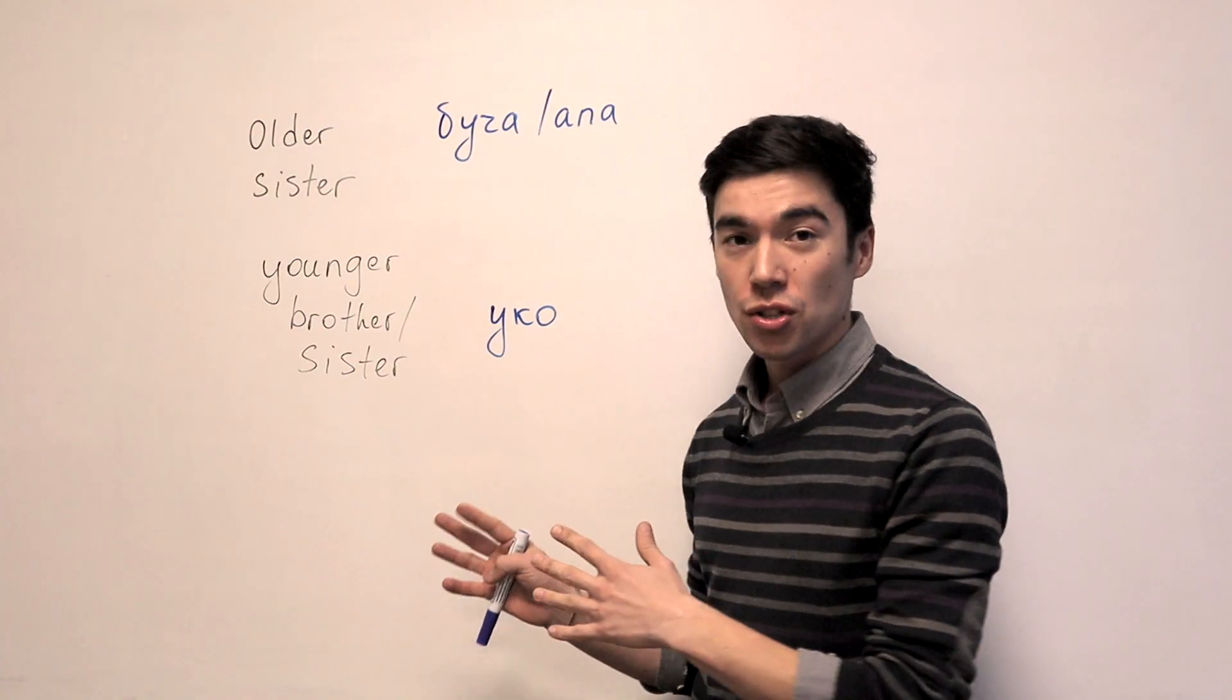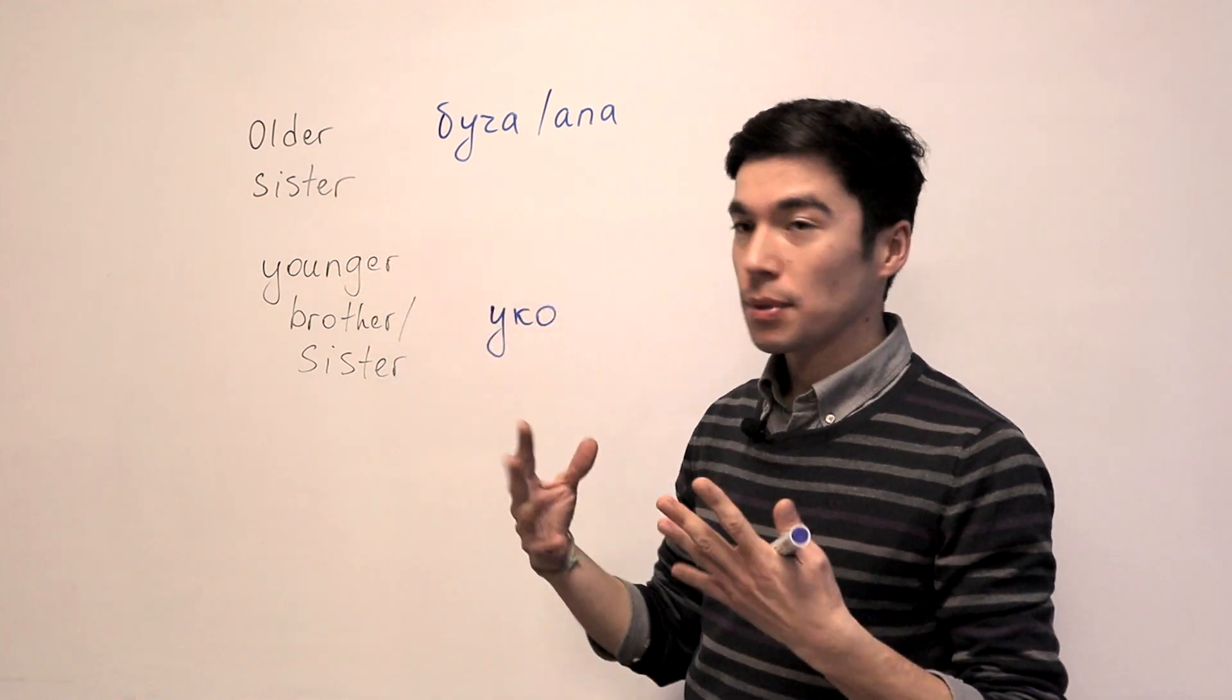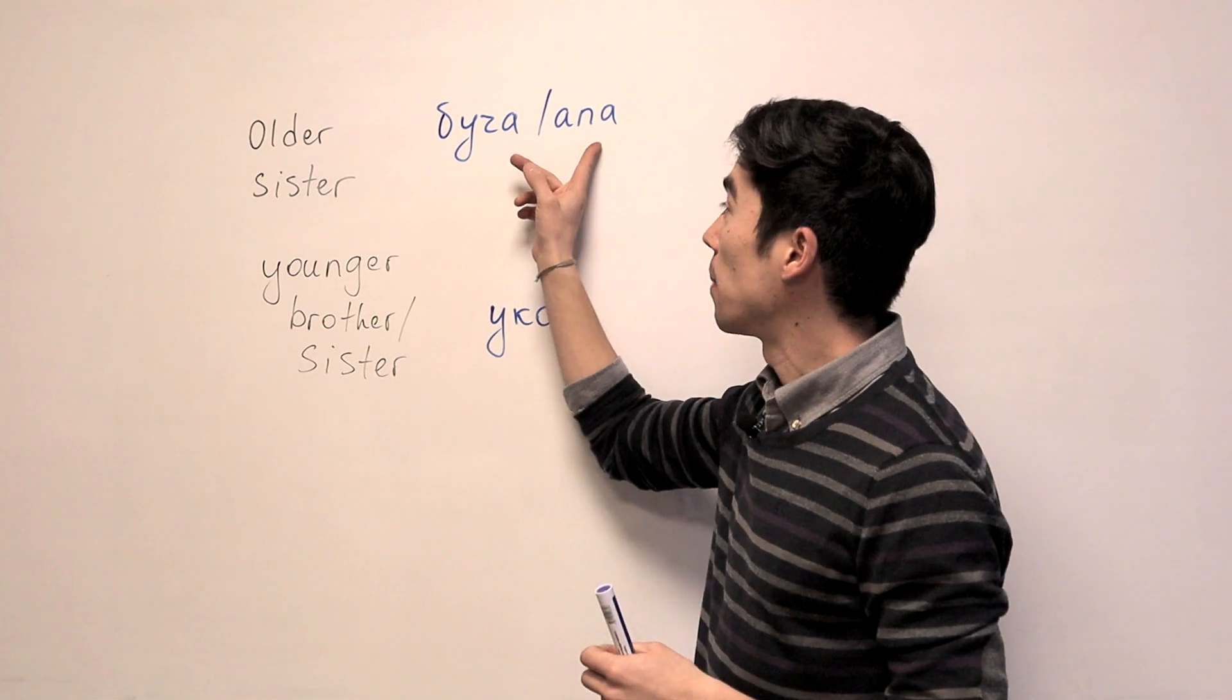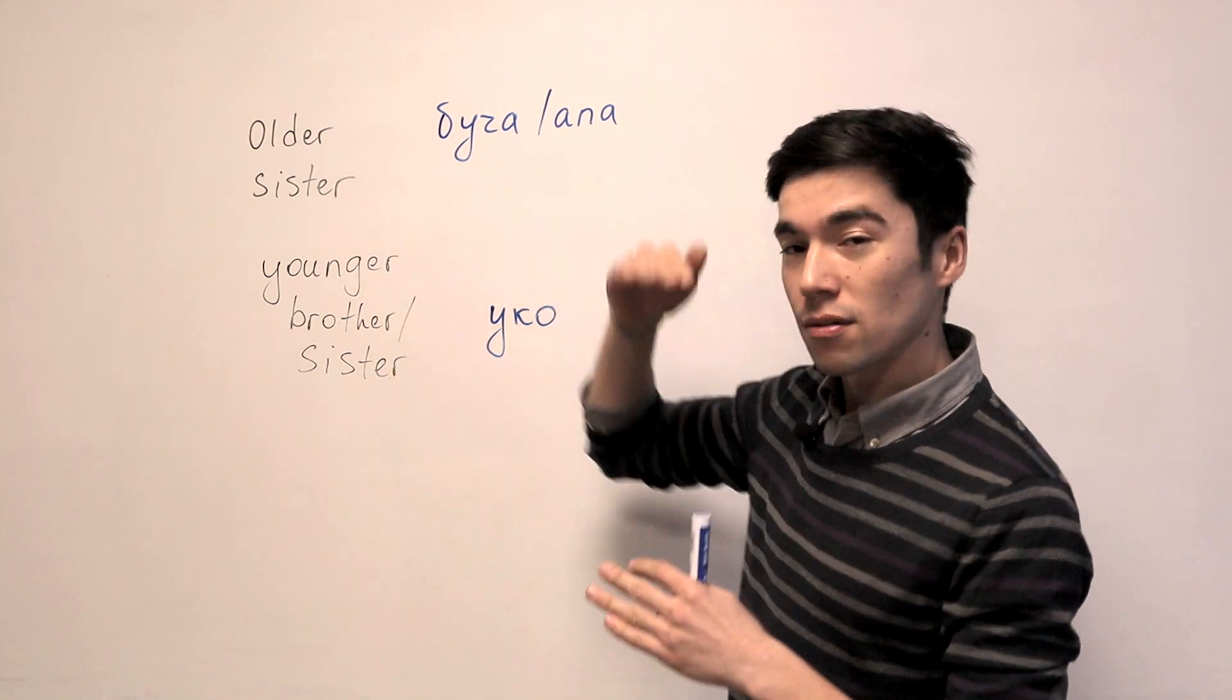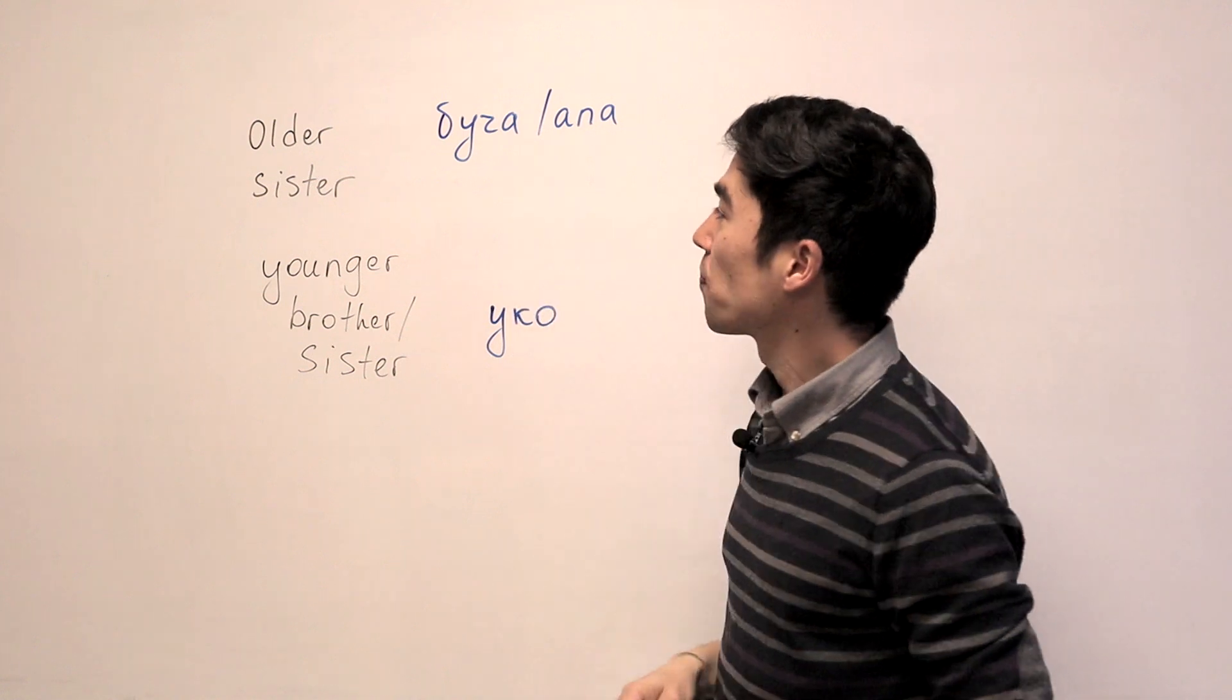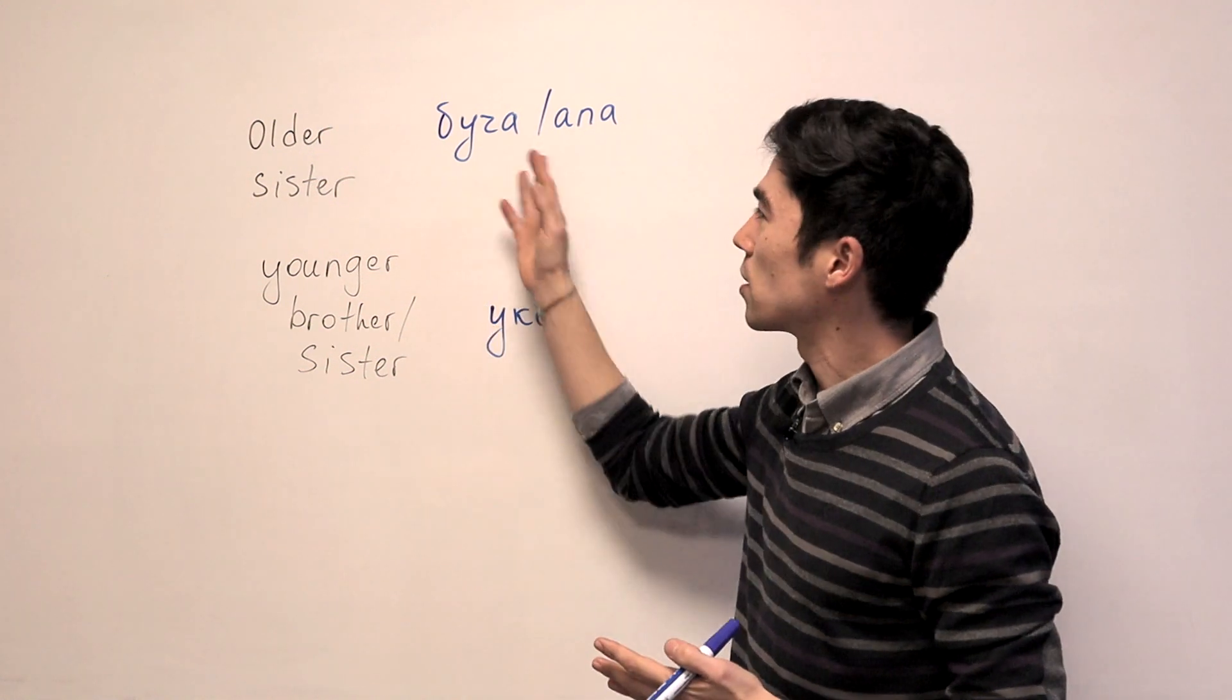Alright. A few more things I forgot to mention when I was talking about sister. So older sister, sometimes we say Buche or Apa, depending on the place in Tajikistan. And Buche, older. Apa is the same. And it's informal. In the books, you will not see this probably.